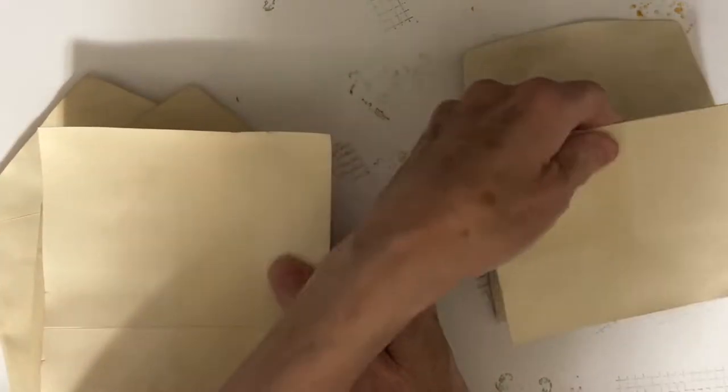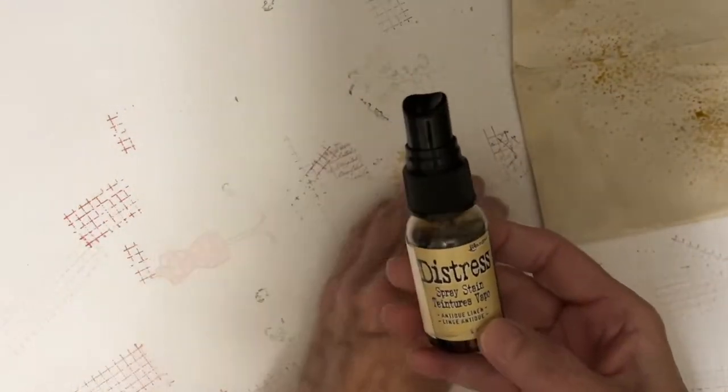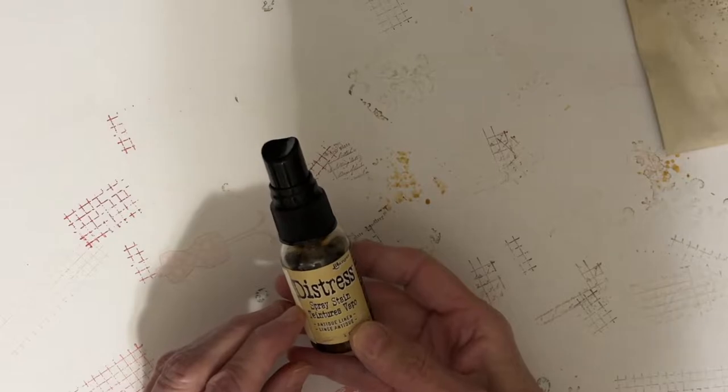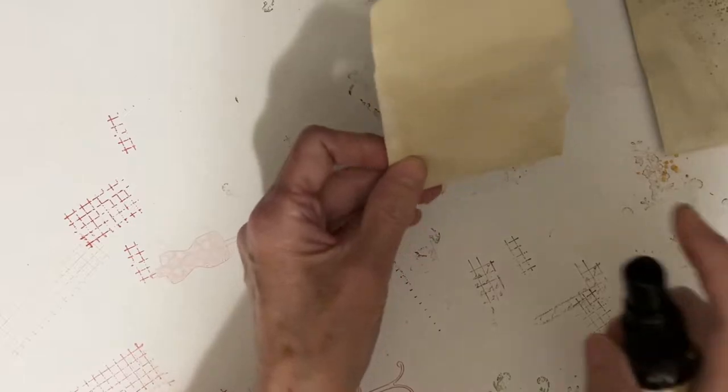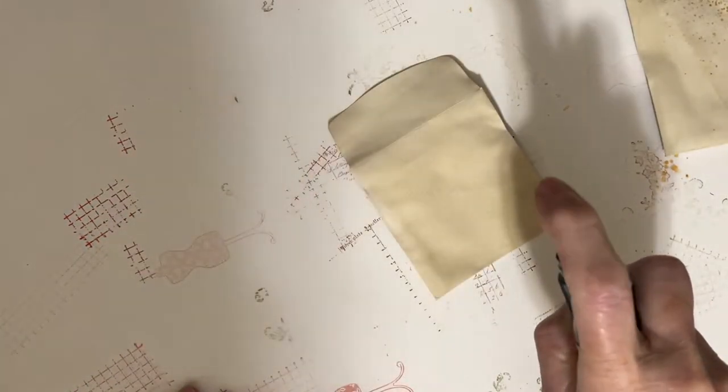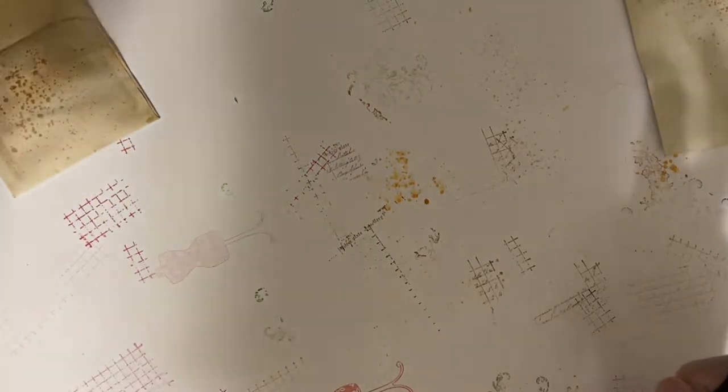This is just a notebook page that will go into one of them. So what I've done is I've taken the envelope and I'm just spraying just a little bit of the Distress Stain Spray, the Vintage or Antique Linen on a couple of them. Do you see how that's just kind of playing? So I'm just doing a couple of little spritzes and then I'm going to set them aside to dry.